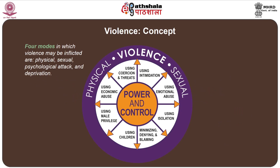There are four modes in which violence may be implicated: physical, sexual, psychological attack, and deprivation. Looking at the diagram, it highlights two important forms — physical and sexual — which are mostly controlled by power. Violence also leads to secondary processes of abuse, particularly using intimidation, emotional abuse, isolation, child abuse, male privilege, economic abuse, and coercive and threatening behavior.